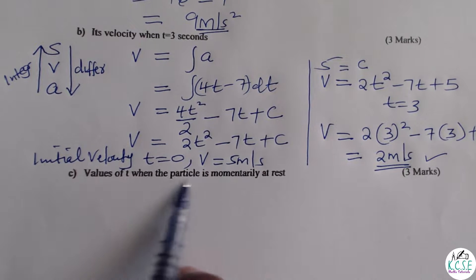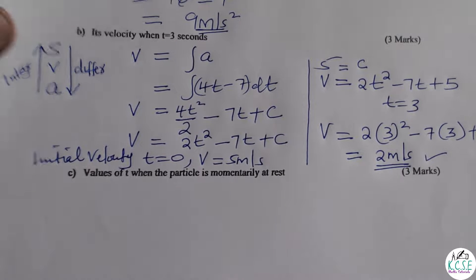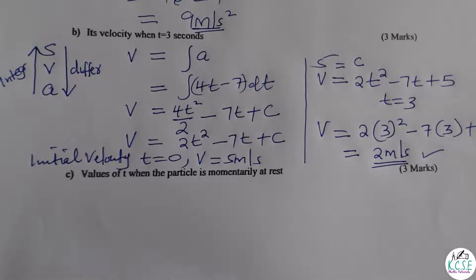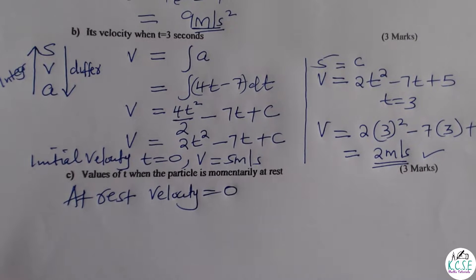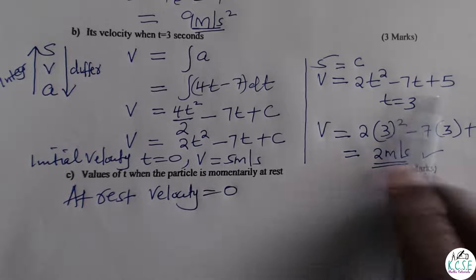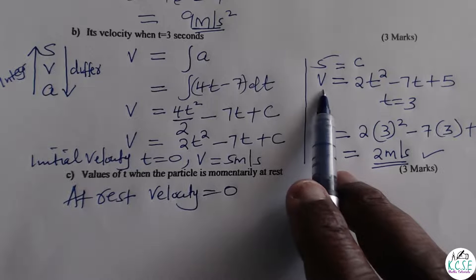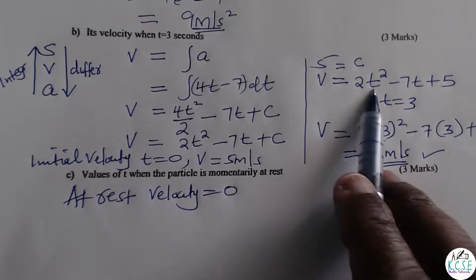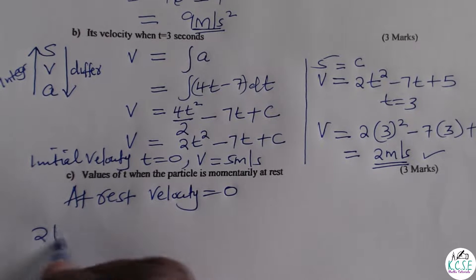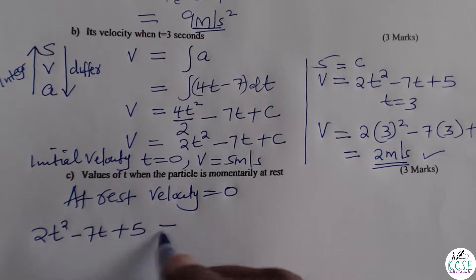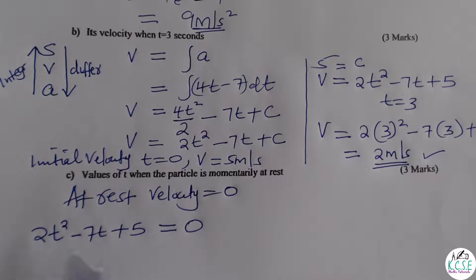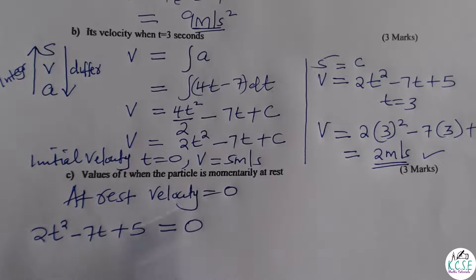Part C: values of t when the particle is momentarily at rest. When the particle is at rest, velocity equals 0. Take the velocity expression 2t squared minus 7t plus 5 and set it equal to 0. This forms a quadratic equation, and solving it gives the values of t when the particle is at rest.